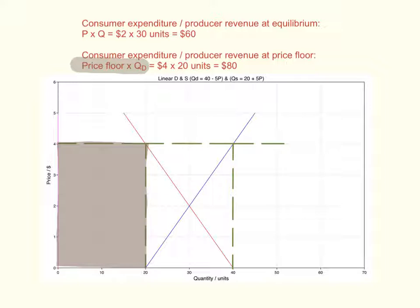Remember, there is an excess supply. We're looking at the revenue that producers will earn from selling, which depends on the quantity demanded. So you multiply $4 × 20 units = $80.